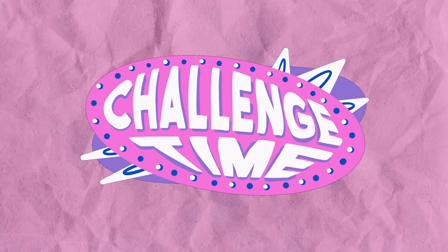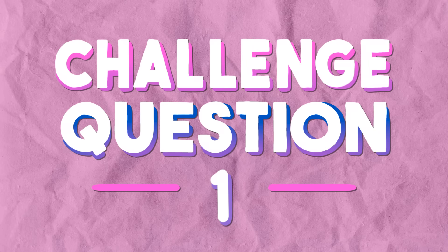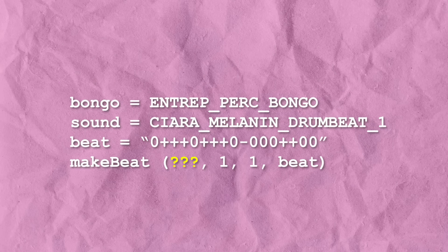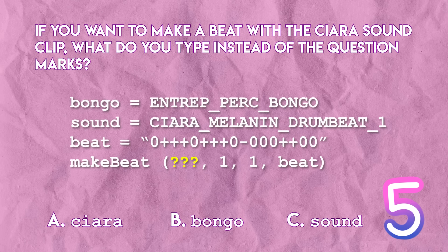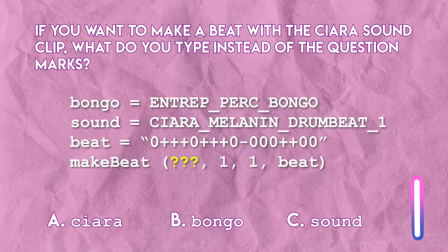Now that you know so much about making beats, let's test out our new knowledge with a little segment I like to call Challenge Time! I'm going to give you three challenge questions and you can press pause at any time during the countdown if you need more time to think. Challenge question number one: take a look at this code. If you want to make a beat with the Sierra sound clip, what do you type instead of the question marks? Is it A: Sierra, B: Bongo, or C: Sound?